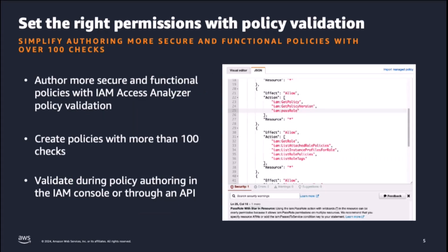IAM Access Analyzer provides policy checks that help validate your IAM policies. These include basic policy checks that validate your policy against policy grammar and AWS best practices. You can view policy validation check findings that include security warnings, errors, general warnings, and suggestions for your policy using the Validate Policy API.